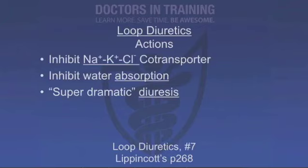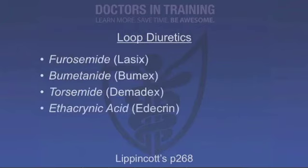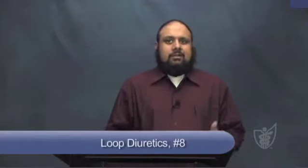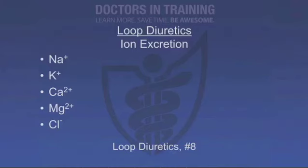The most used loop diuretics are furosemide, bumetanide, torsemide, and ethacrynic acid. When you administer a loop diuretic, there's a net increase in urinary excretion of sodium, potassium, calcium, magnesium, and chloride ions. This becomes particularly important when we think about how powerful these diuretics are. Loop diuretics are rapidly absorbed and eliminated very quickly through the kidney — they have a rapid half-life. We always learned on the wards that Lasix lasts six hours.